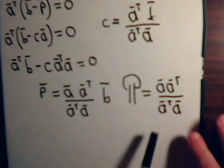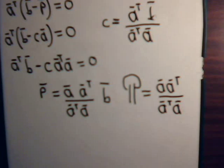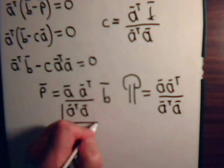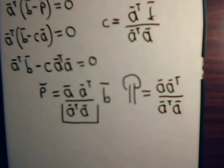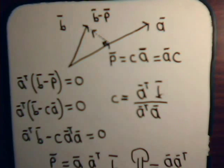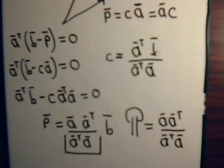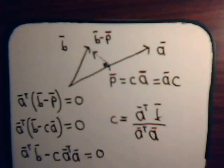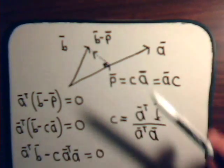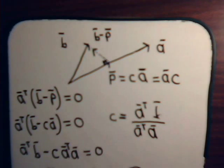So this quantity A·A transpose is a matrix, A transpose A is just a number, and together they form the projection matrix — the thing that vector B is multiplied by to get its projection onto vector A. In other videos we'll deal with situations where a vector is projected not onto a single vector but onto a subspace — a combination of many different vectors — but the principle is exactly the same as what we just saw here in our simple example.